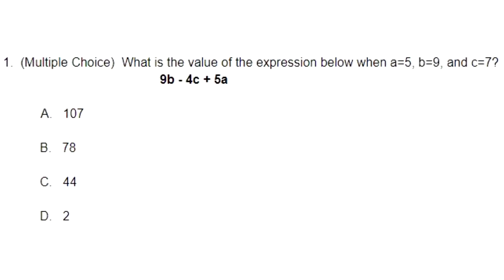Number one says multiple choice. What is the value of the expression below when a equals 5, b equals 9, and c equals 7? The expression is 9b minus 4c plus 5a. So to solve this problem we just have to use the information they've given us, substitute the values for those variables, and then solve just like any other expression. So let's get to our paper and let's get to work.